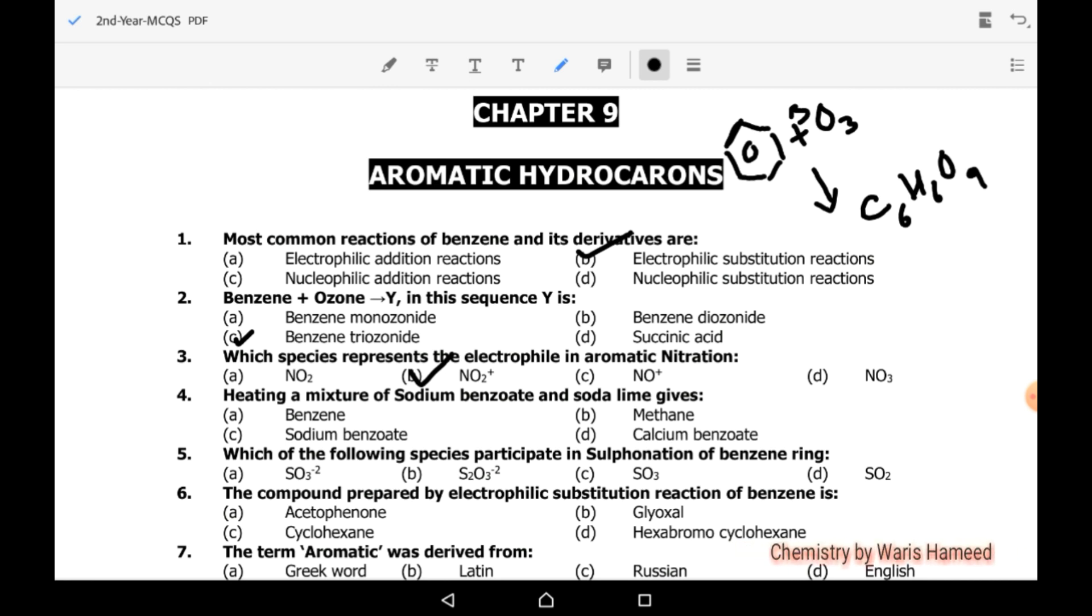Heating a mixture of sodium benzoate with soda lime gives benzene. It is a common method of preparation of benzene. Which of the following species participate in sulfonation of benzene ring? It's SO3, and how does SO3 act as electrophile? Look at its structure.